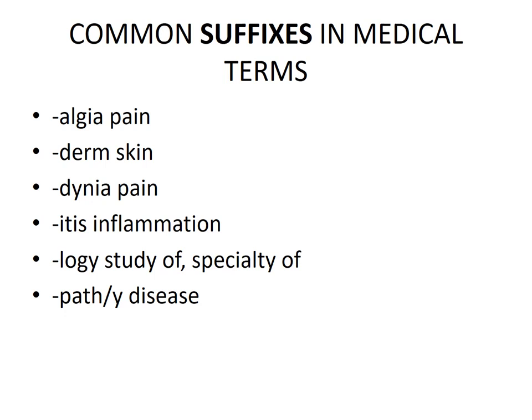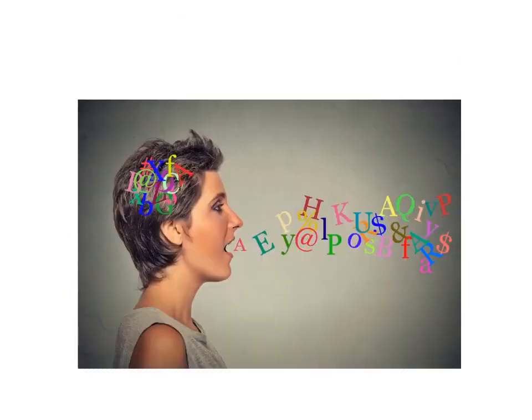Common suffixes in medical terms: '-algea' معناها pain — ألم. '-derm' as a suffix معناها skin. '-dynia' معناها أيضاً pain. '-itis' راح تتكرر كثيراً معناها inflammation — التهاب. '-logy' معناها study of or specialty of. '-path' or '-pathy' معناها disease. هذه نهاية المحاضرة الأولى — هذه مقدمة للمصطلحات الطبية.